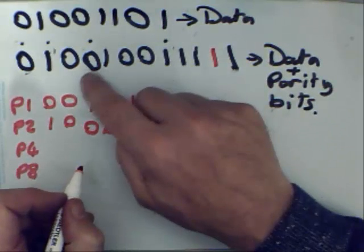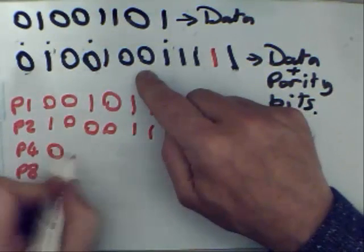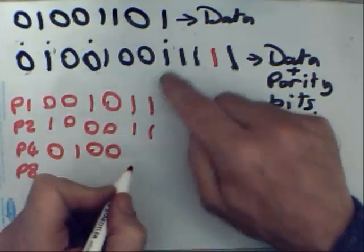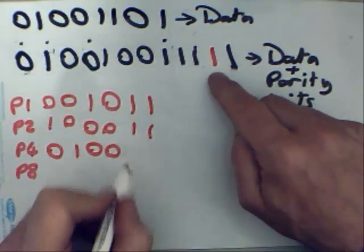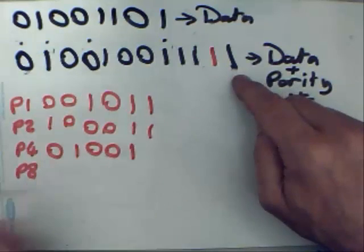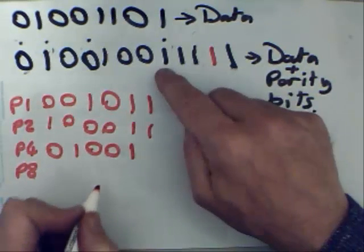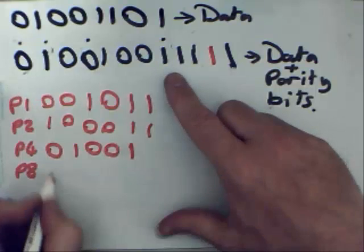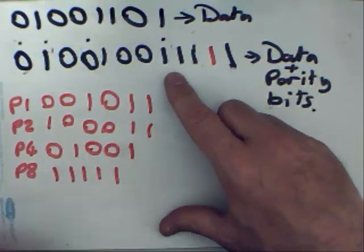Parity bit number 4, we're going to use the 4 so we've got 0, 1, 0, 0 and we're going to miss 1, 2, 3, 4. And then we've got one other bit left and parity bit number 8, we're going to use 8 bits. We've only got 1, 2, 3, 4, 5 so we need all of those.